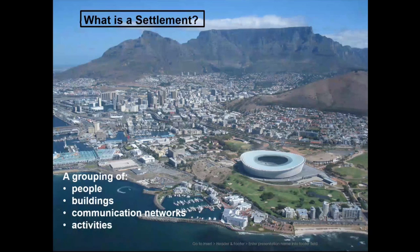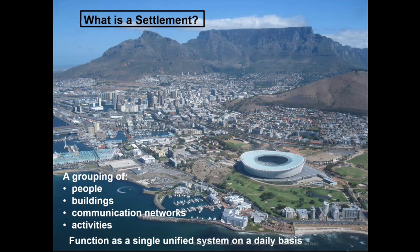We need people. Where do these people have to stay? They have to stay in buildings. How do they get to work? Communication, roads, railway lines, buses. And then, obviously, they need to do something — we just don't stay in buildings. So therefore, they perform different activities. And very, very important is that they work as a single unified unit.